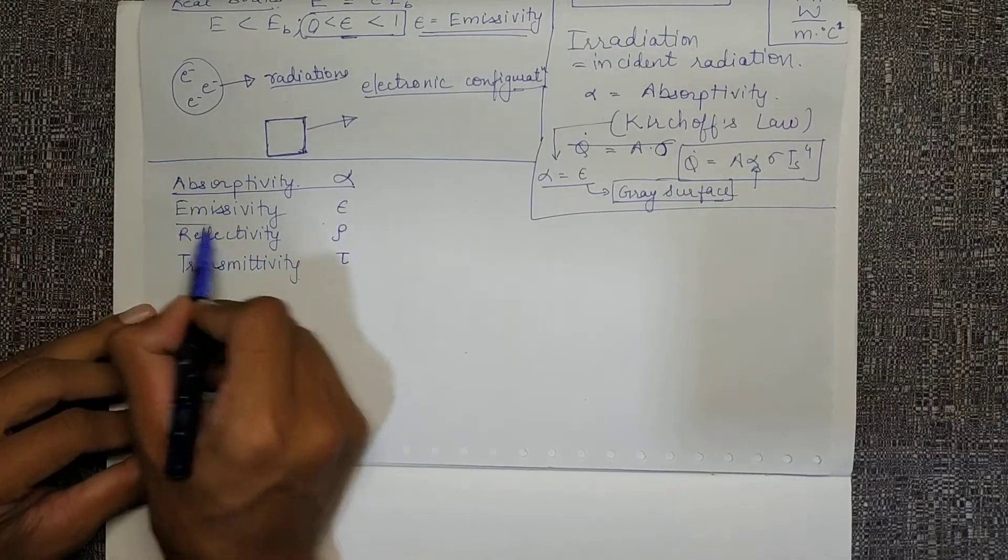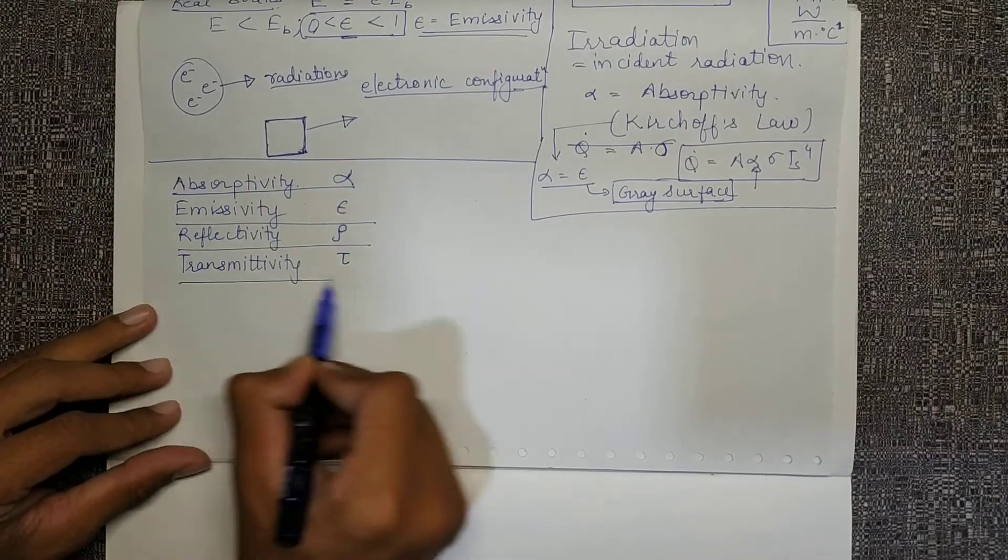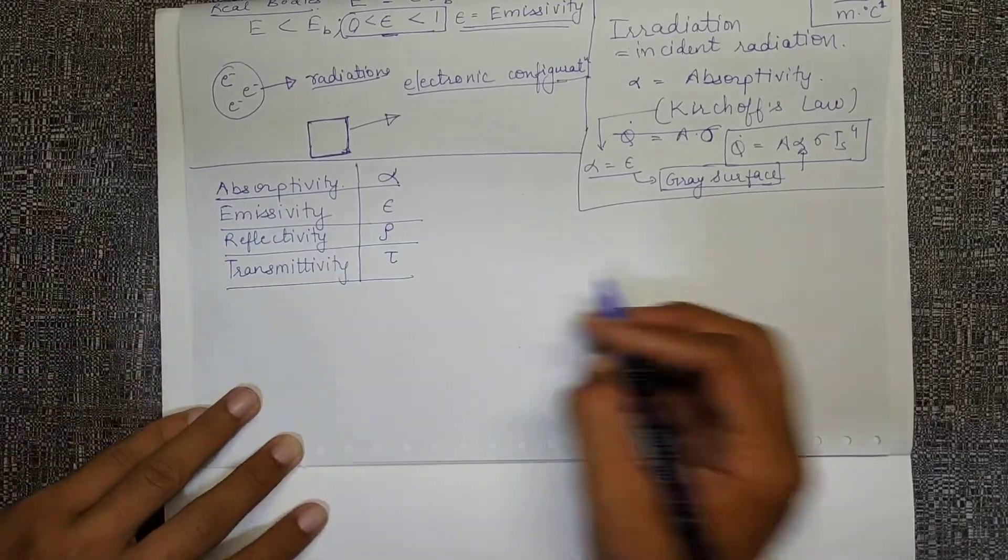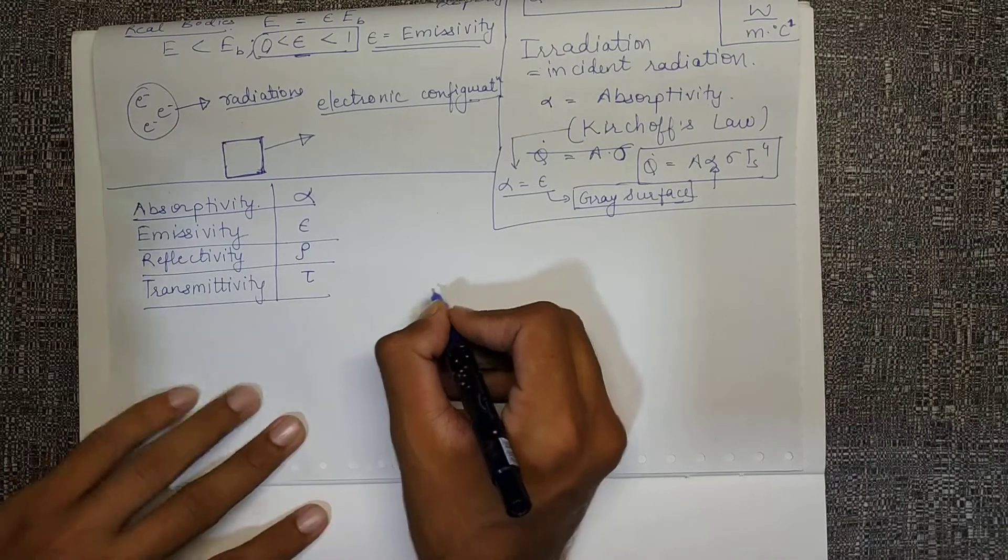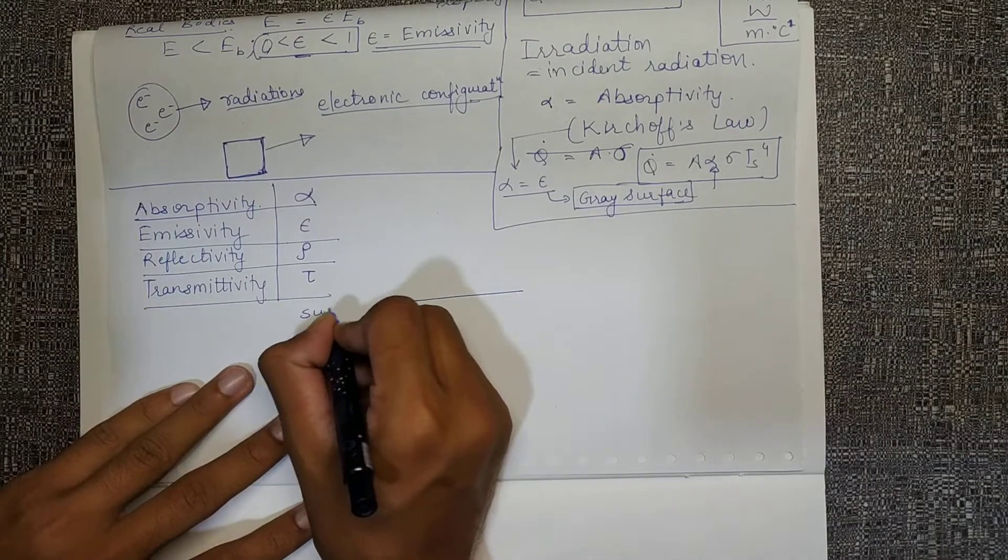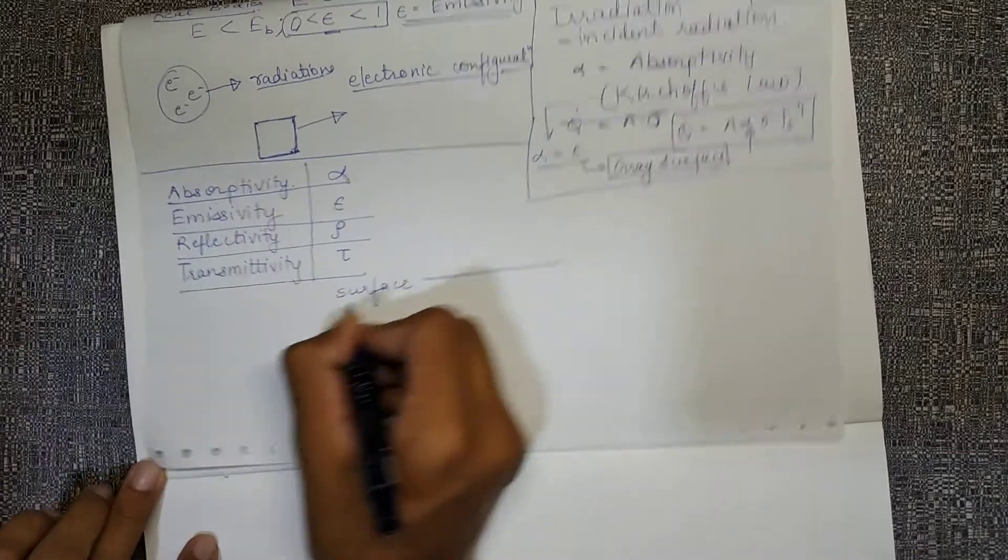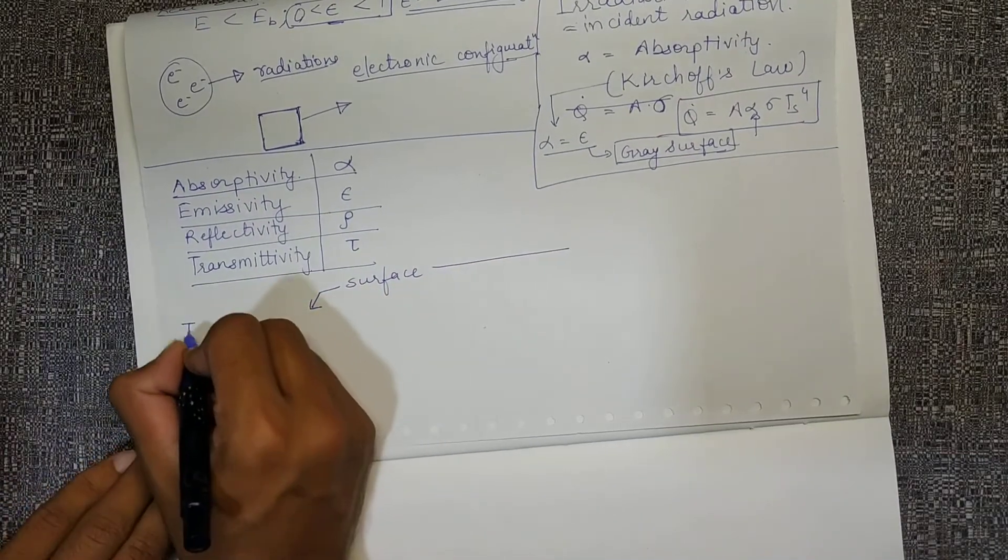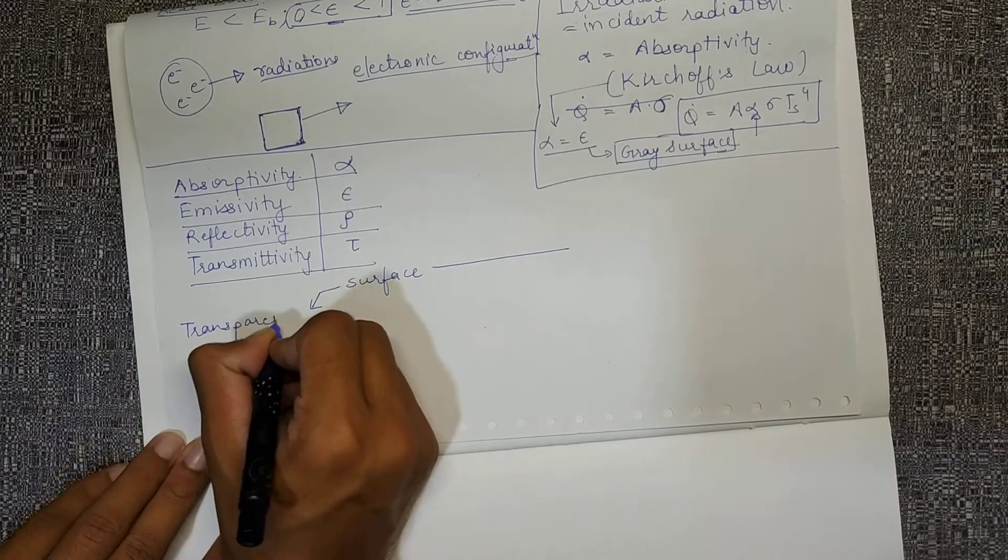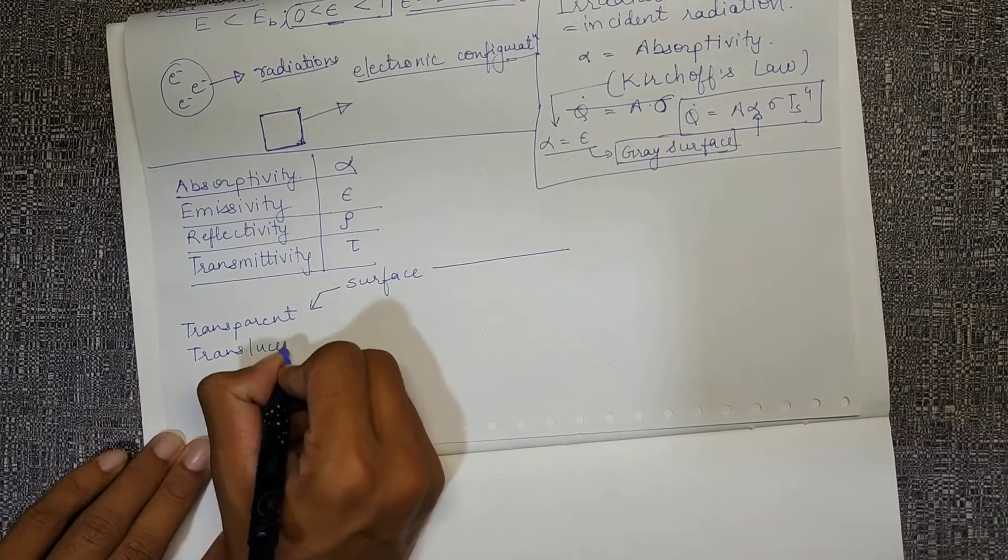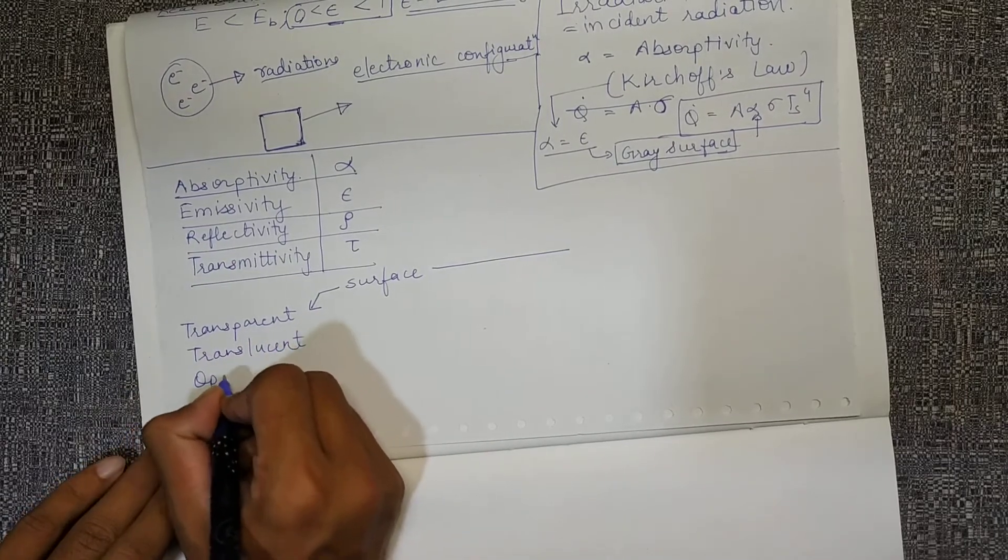These are the four things which are involved. Now, let's make a surface. If we are given with a surface, that surface may be transparent, the surface may be translucent, or the surface may be opaque.